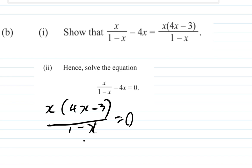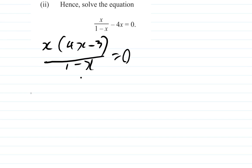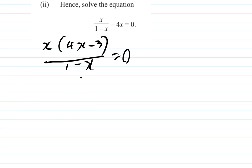I want you to pause the video and work it out. Now, if you have 0 divided by any number — for example, 0 over (1 minus x) — that equals 0. So let's make the numerator equal to 0: x times (4x minus 3) equals 0.